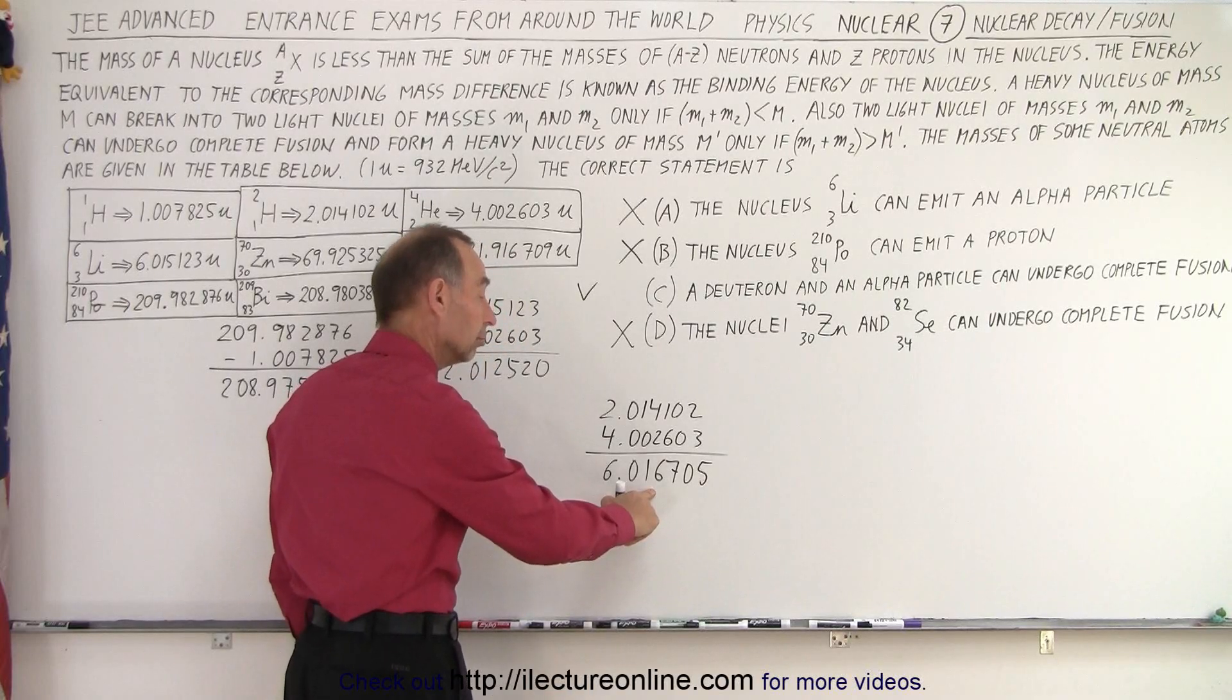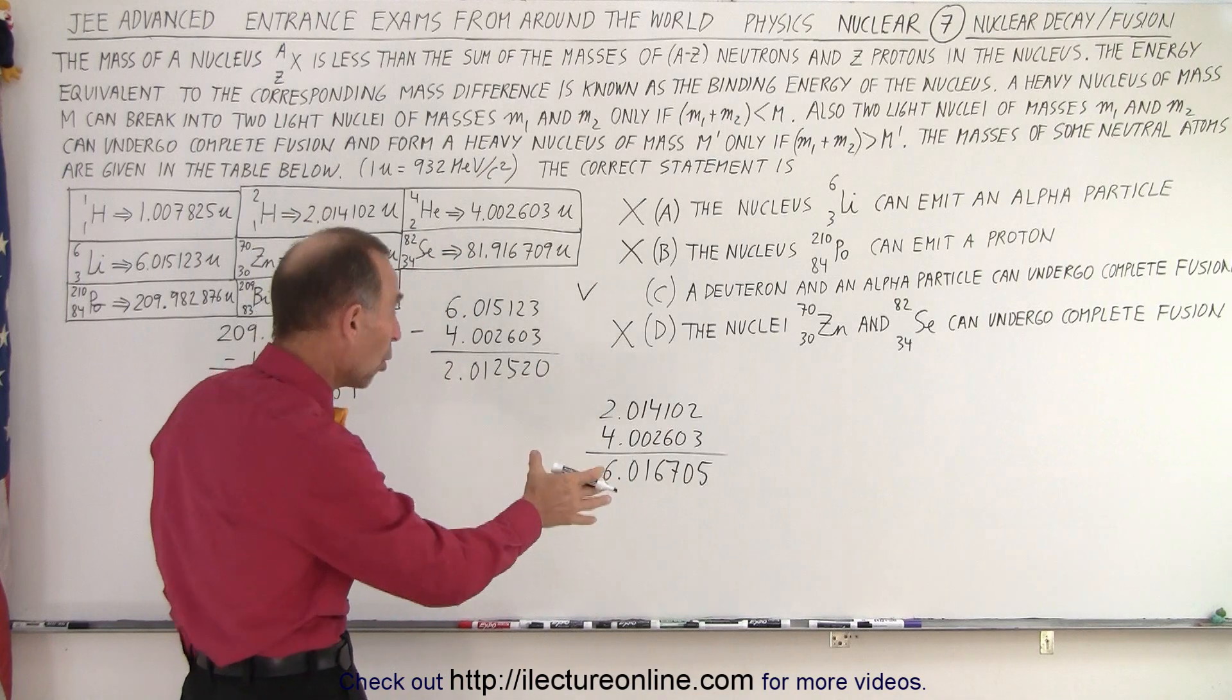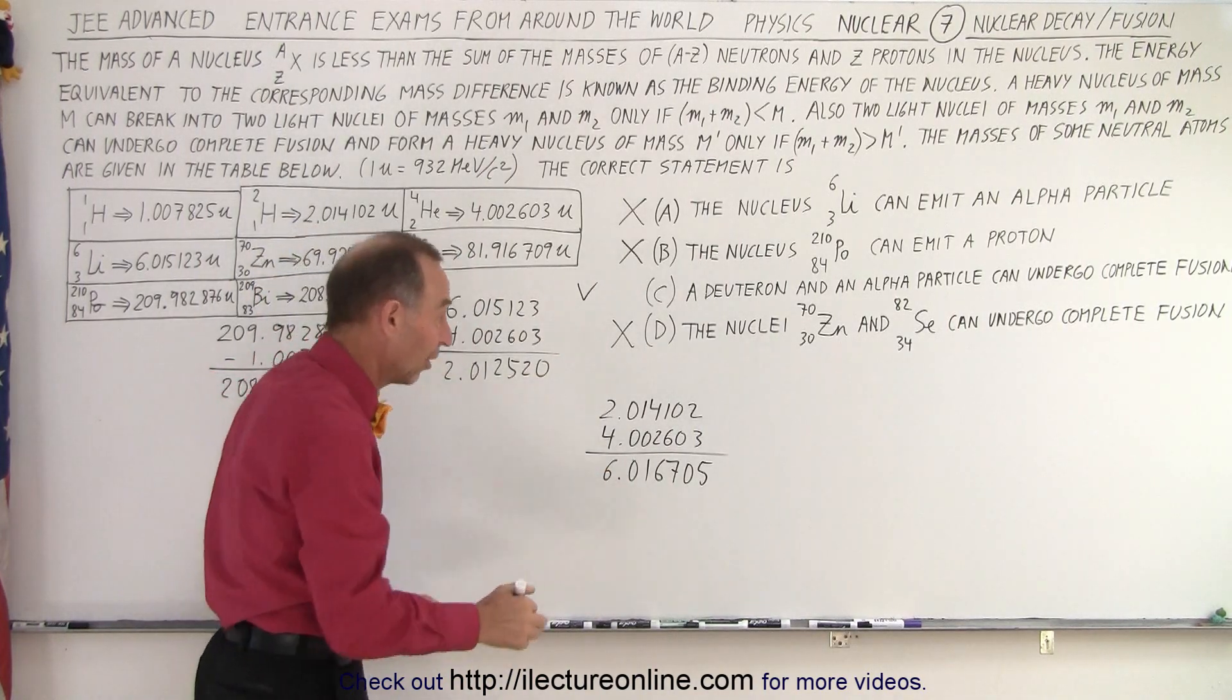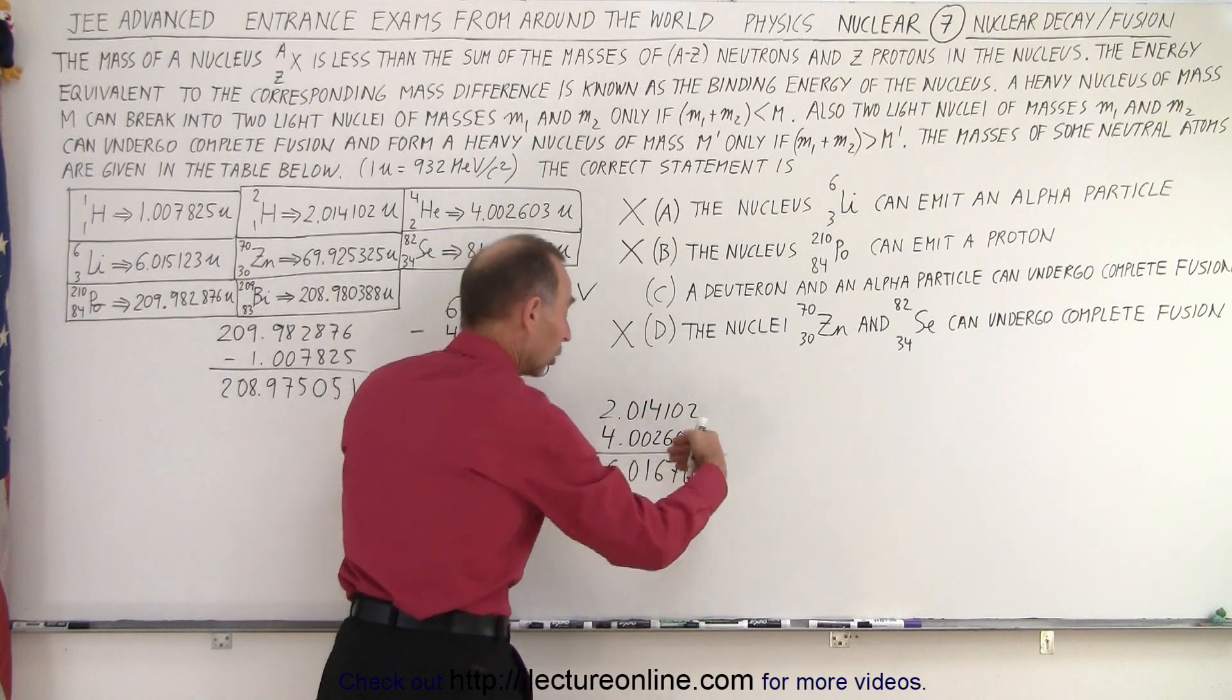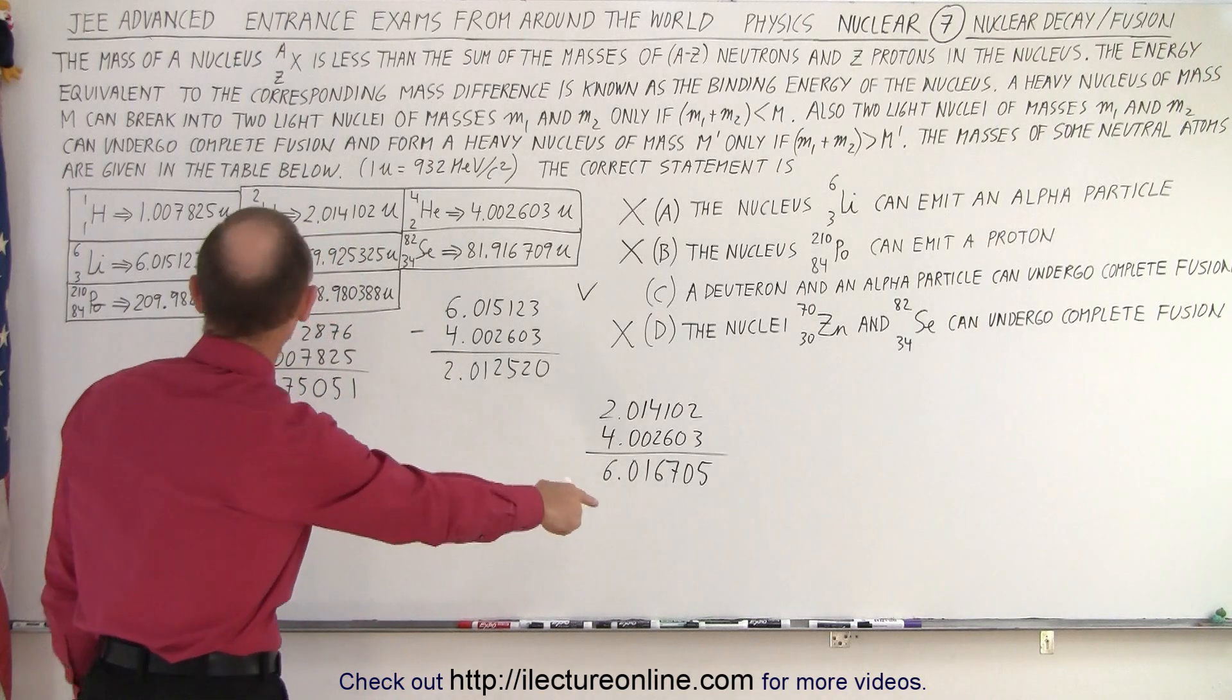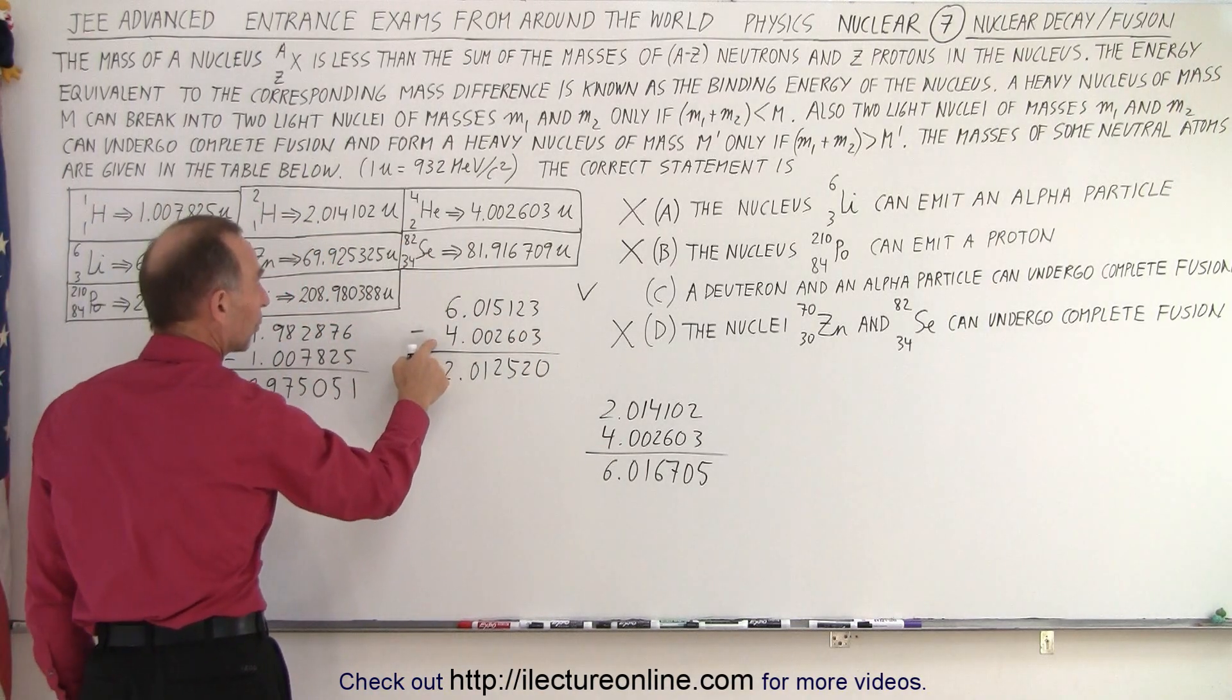Remember, we want to lose mass. So when we add these two masses together, this mass should be larger than the particle that it ends up making. Of course, that would then be lithium-3-6 because this has one, that has two protons. This has two protons. This has one proton, a total of three protons, a total of six neutrons.